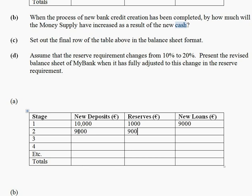10% of that stays in the bank and the remainder is lent out — that's the starting point for stage 3. Again, 10% stays in the bank and the remainder is lent out. 10% stays in the bank of 729 and the remainder is lent out in loans. You can continue this process using the concept highlighted here, but we're only required to complete four stages of this question.